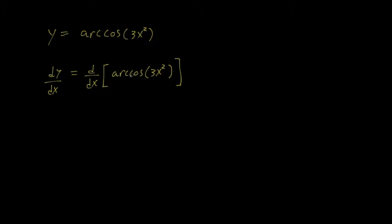Now we know how to take the derivative of arc cosine of x, and we see that this is a function. 3x squared is a function nested within the arc cosine function. So that leads us to believe that we're probably going to be using chain rule. So let's say u equals 3x squared for the inner function.